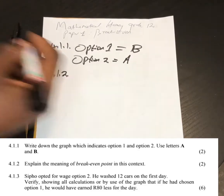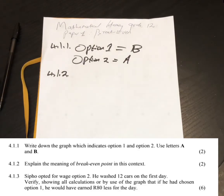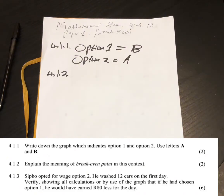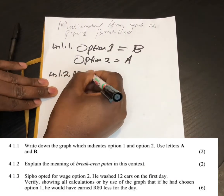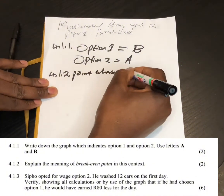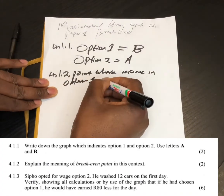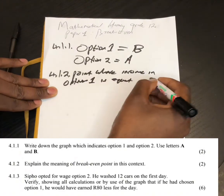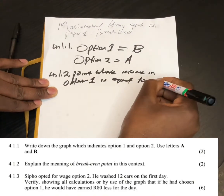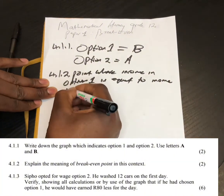Question 4.1.2 asks us to explain the meaning of the break-even point in this context. The break-even point is a point where the income under option 1 is equal to the income under option 2.